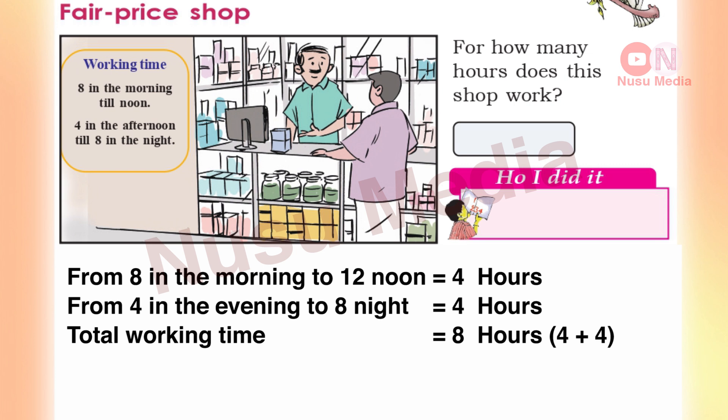From 8 in the morning to 12 noon is equal to 4 hours. Then from 4 in the evening to 8 in the night is equal to 4 hours. So the total working time is 4 plus 4 equals 8 hours.